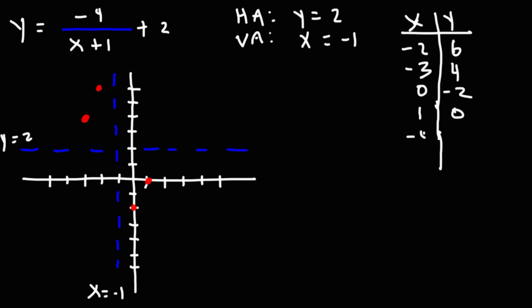Let's pick negative 4 and positive 2. Negative 4 plus 1 is negative 3. So we have negative 4 over negative 3 plus 2. Negative 4 over negative 3 is like 1.33 plus 2, that's going to be about 3.33.